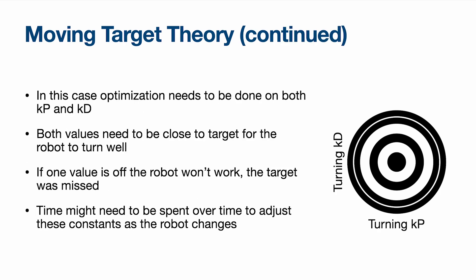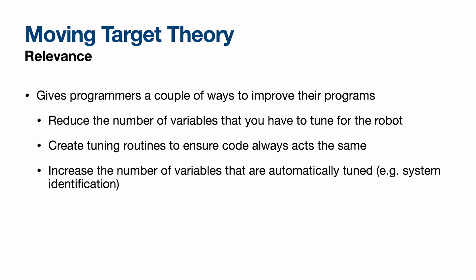This is especially present in PID loops. For example, with a turning PID, you have to have both values pretty much correct or else the robot doesn't turn right and all your stuff is inaccurate. This gives programmers a couple of ways to fix things: reduce the number of variables to tune, which can be hardware, software, or a combined approach; create tuning routines to ensure code always acts the same; and increase the number of variables that are automatically tuned. I'll have a whole video about system identification later, where the robot will basically figure out how it drives and tune those variables accordingly.